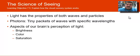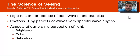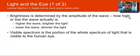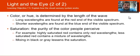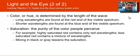Light has properties of both waves and particles. It is made up of photons, which are tiny packets of waves with specific wavelengths. Our brain has three perceptions of light: brightness, color, and saturation. Brightness is determined by the amplitude of the wave — the higher the wave, the brighter the light. The visible spectrum is the portion of the full spectrum visible to the human eye. The color of light is determined by the wavelength — long wavelengths are at the red end, shorter wavelengths at the blue end.